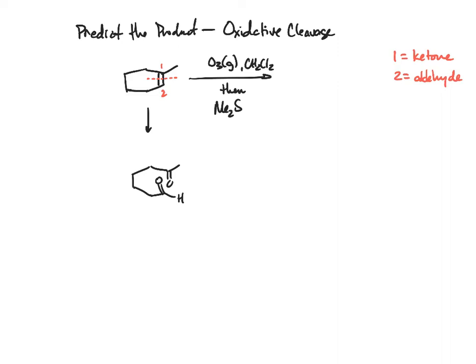So in lieu of completely understanding the mechanism, identify the alkene and you're going to cleave it like that. You're pulling it apart. Then where that former double bond was, each carbon gets an oxygen. So that's a ketone and that's an aldehyde.